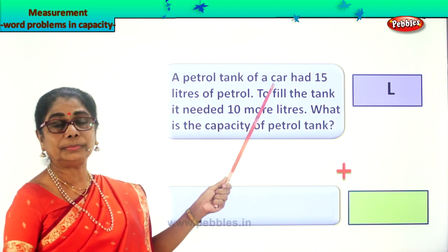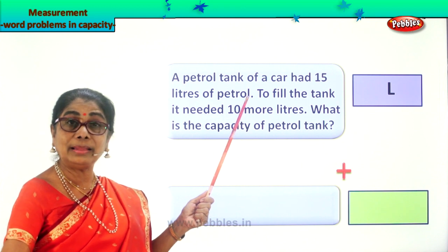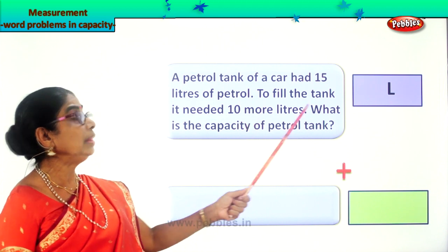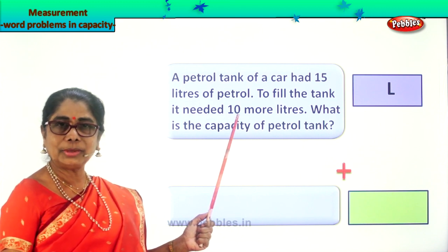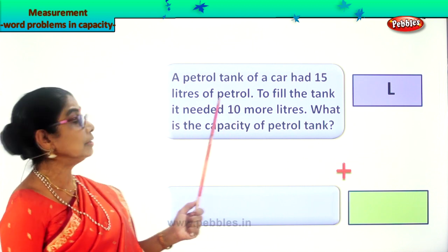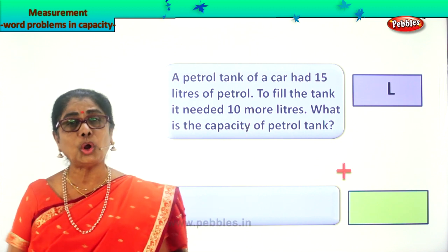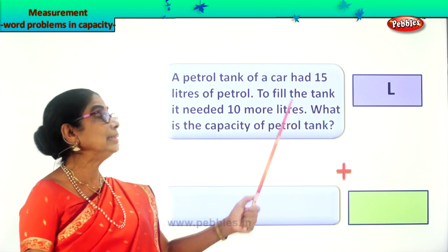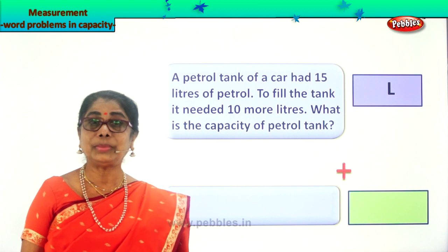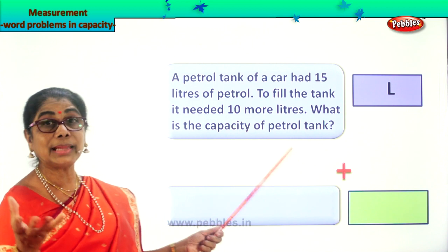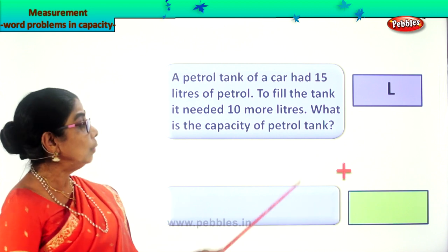A petrol tank of a car — your dad has a car? The petrol tank of a car had 15 liters of petrol, so already in the car there is 15 liters of petrol. To fill the tank, it needed 10 more liters. Dad is taking the family for a trip and he says, 'I have 15 liters in the tank already, but I need 10 more liters to fill it up.' The question is: what is the capacity of the petrol tank — how much petrol can it hold? That's the capacity.